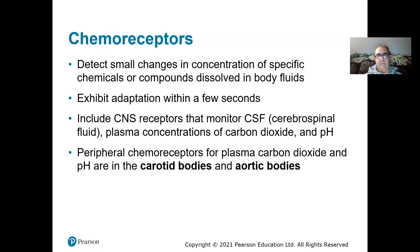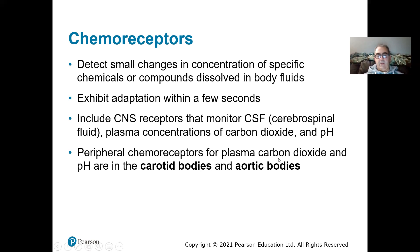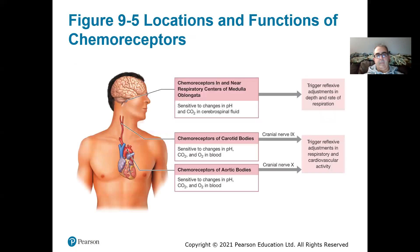Another type of general sense receptor is chemoreceptors, which respond to chemicals. Talking about general senses, they detect small changes in the concentration of specific chemicals or compounds in your body fluids. They adapt easily. For example, we have receptors in our brain that monitor the cerebrospinal fluid — specifically the concentration of hydrogen ions to monitor its pH. We also have chemoreceptors that monitor how much carbon dioxide is in our blood, and they'll change your breathing patterns accordingly to get rid of more carbon dioxide or bring in more oxygen.